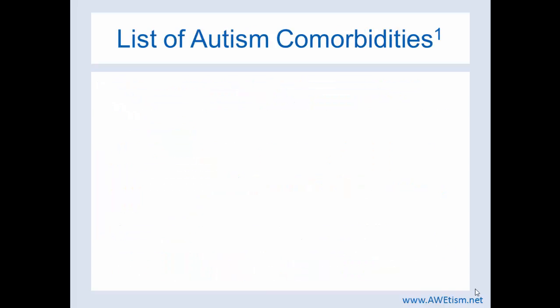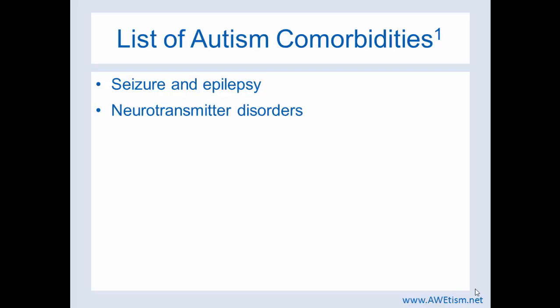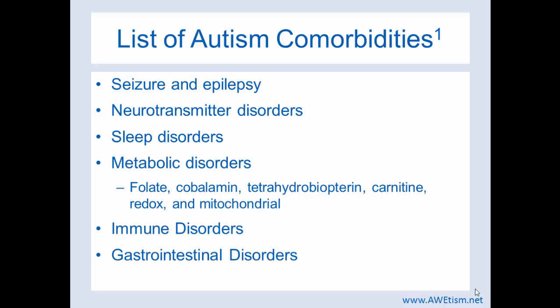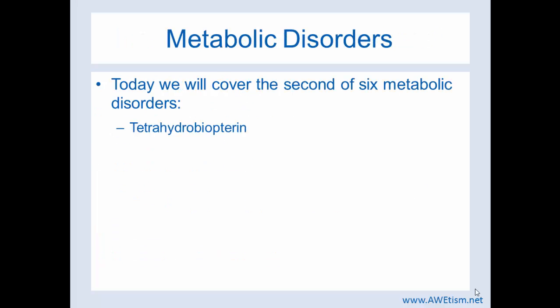Here's a list of comorbidities: seizure and epilepsy, neurotransmitter disorders, sleep disorders, metabolic disorders — and today we're going to do a deep dive into tetrahydrobiopterin — immune disorders, and gastrointestinal disorders. So let's get into tetrahydrobiopterin.